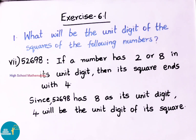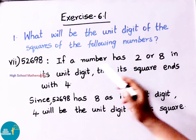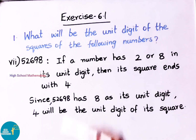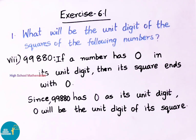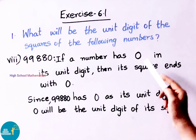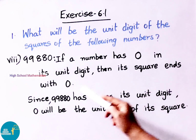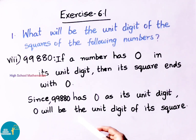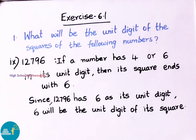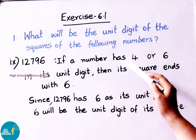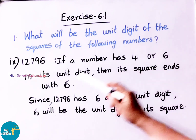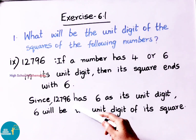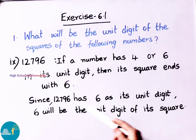See now the seventh sum — 52698. If a number has 2 or 8 in its unit's digit, then its square ends with 4. Since the number 52698 has 8 as its unit's digit, 4 will be the unit's digit of its square. See now the eighth sum — 99880. Since 99880 has 0 as its unit's digit, 0 will be the unit's digit of its square. See now question number 9 — 12796. If a number has 4 or 6 in its unit's digit, then its square ends with 6. Since the number 12796 has 6 as its unit's digit, 6 will be the unit's digit of its square.